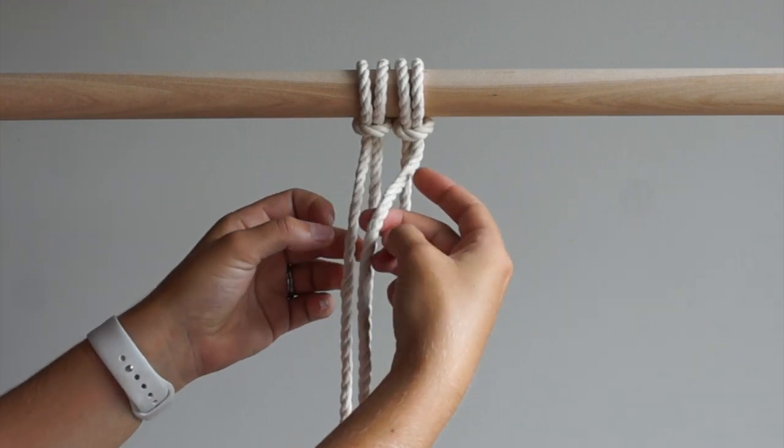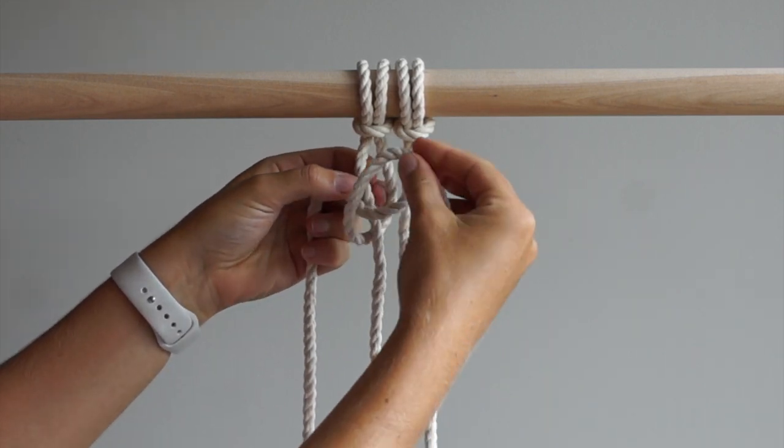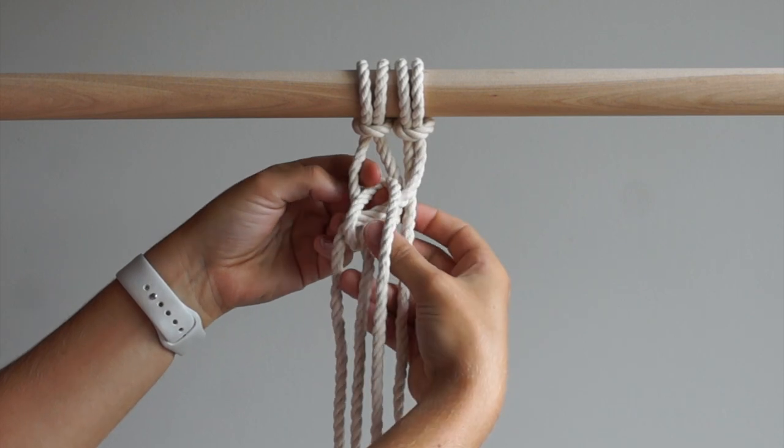Start by crossing the two outer cords in front of your work. Bring your cord in the back left to the front of your work and through the loop, then repeat with the back right cord.